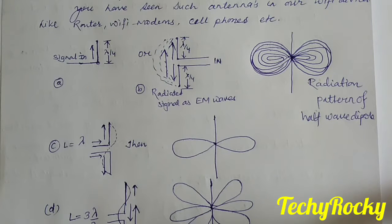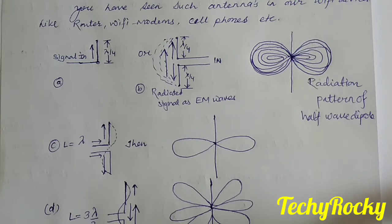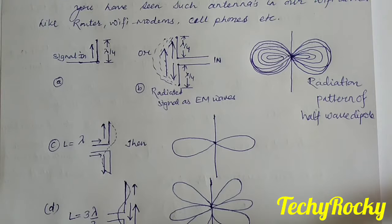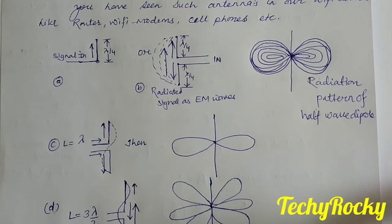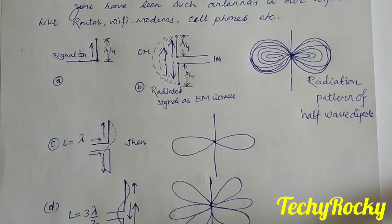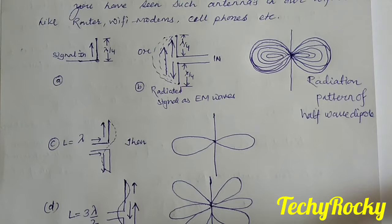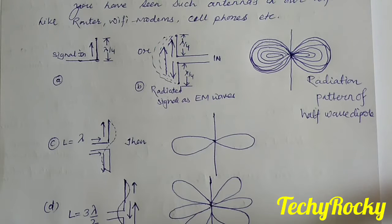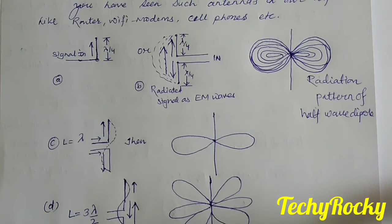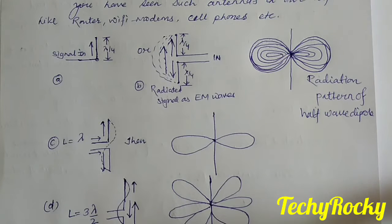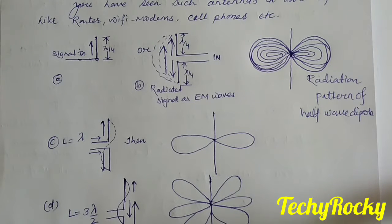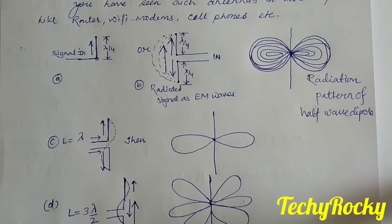For option A, a simple dipole radiates with a length of lambda by 4, and its pattern is isotropic. The second is the half-wave dipole antenna, whose radiation pattern is seen mainly in two directions.